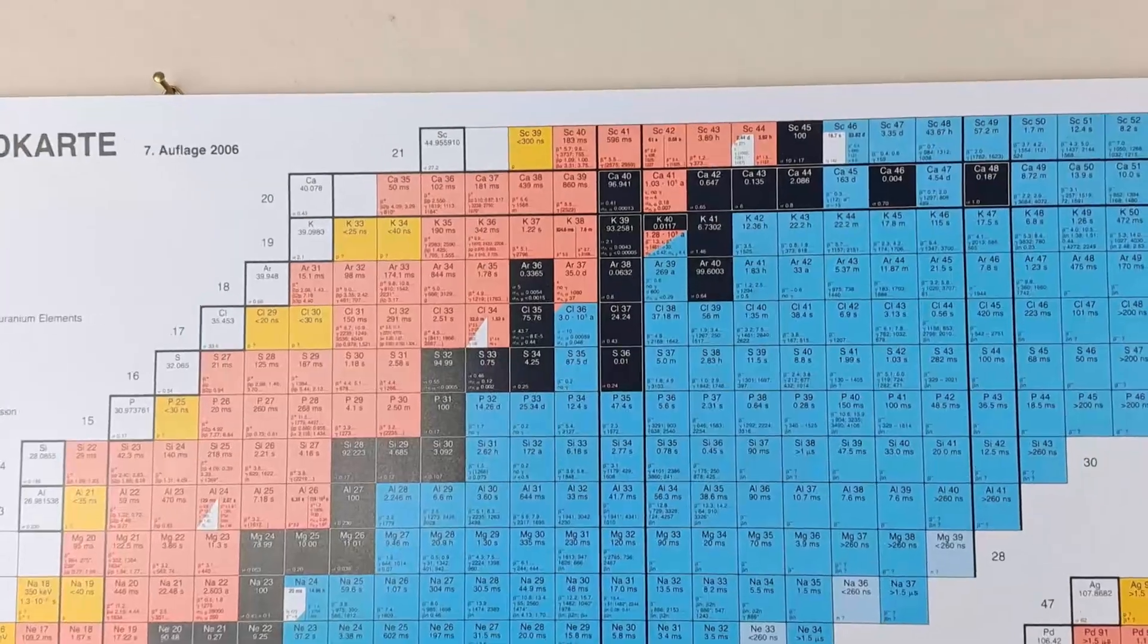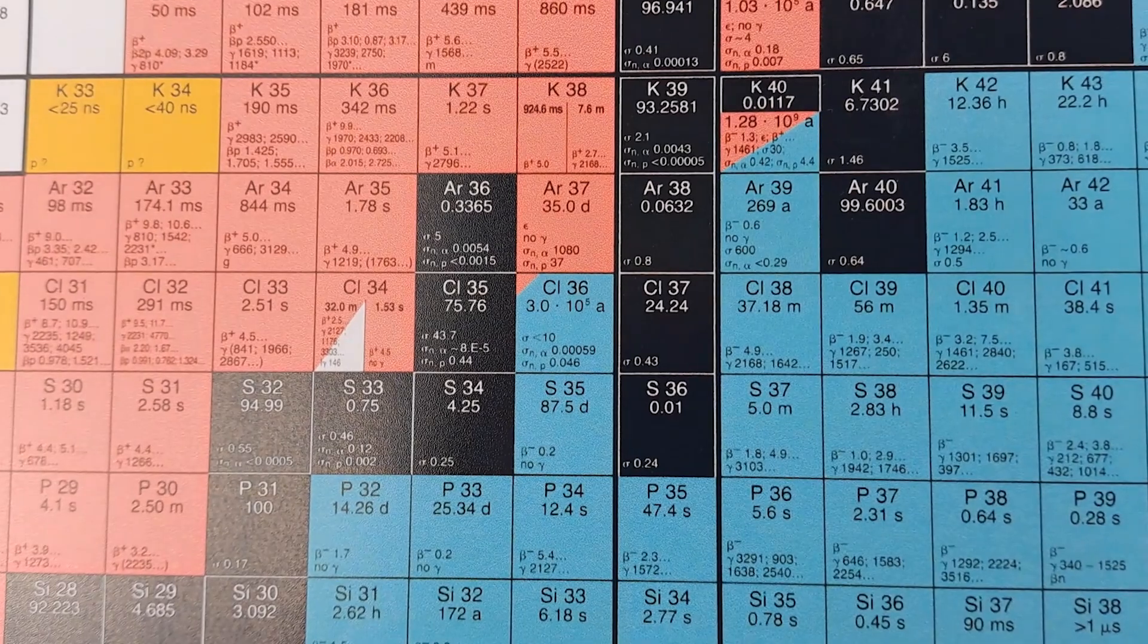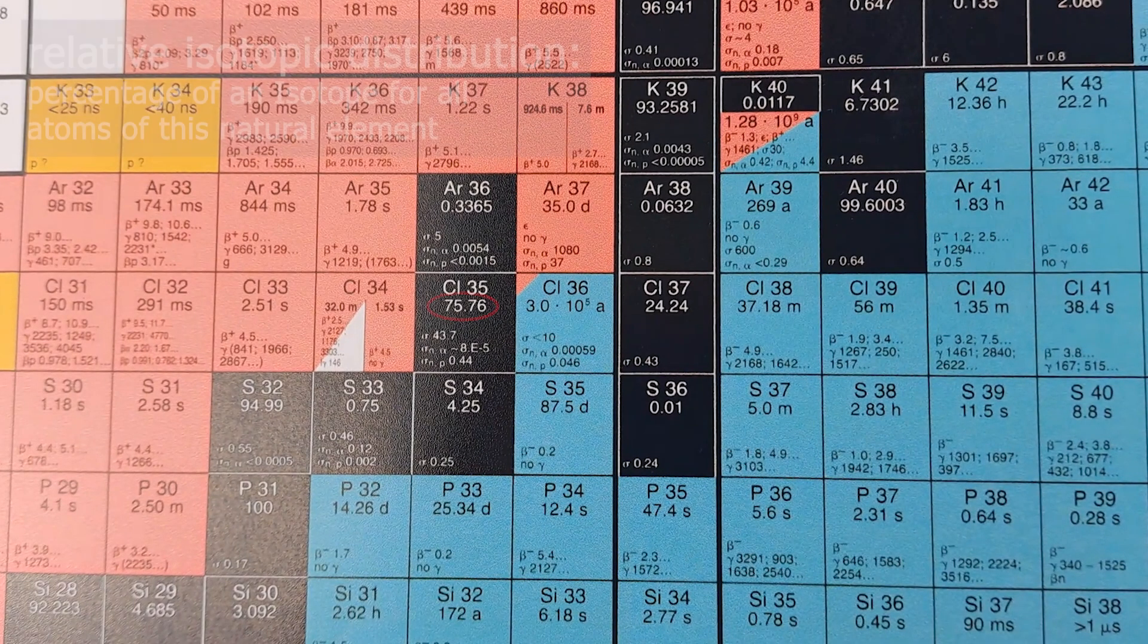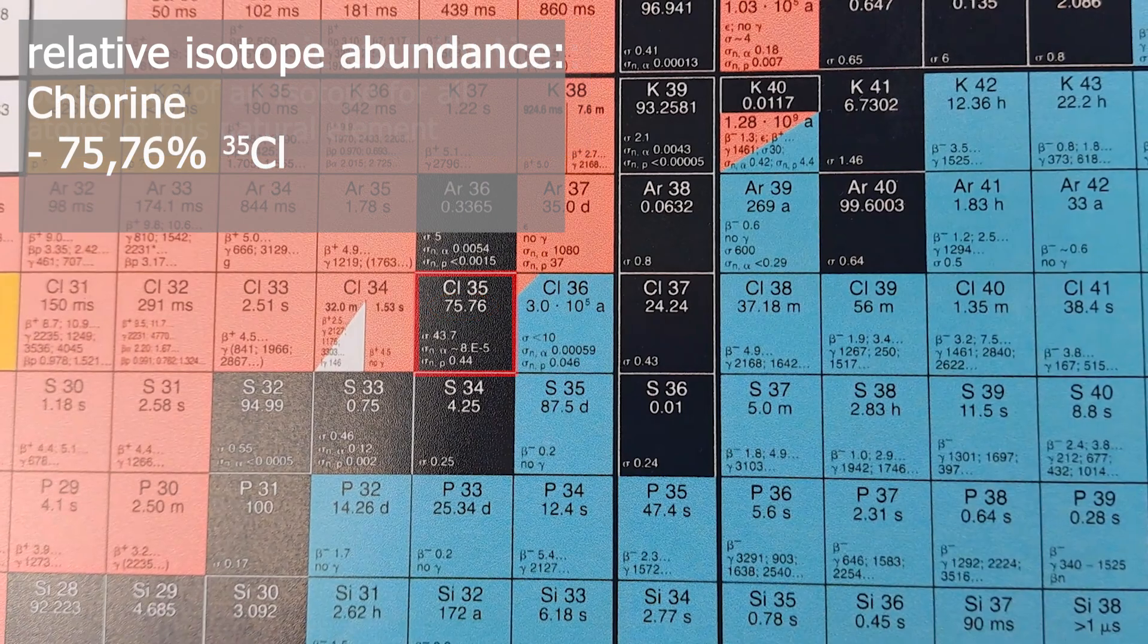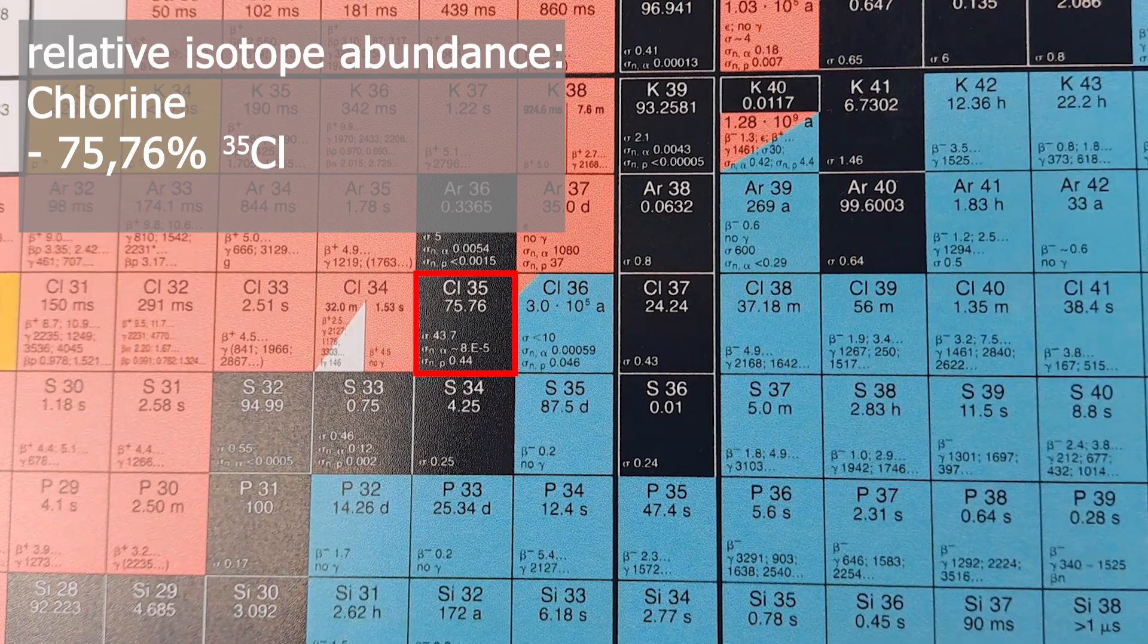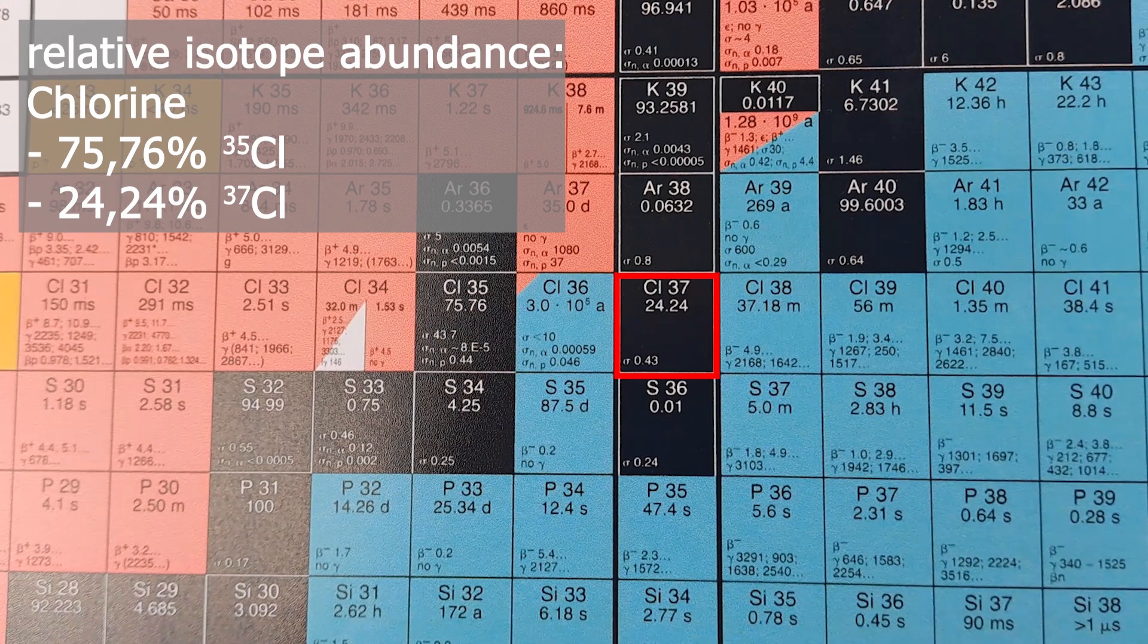Now let's take a look at the numbers inside the tiles. Let's start with the simple stable nuclides. Of course they don't have a half-life, but we do have another very interesting number. The relative abundance of this isotope in this naturally occurring element. For instance, chlorine-35 isotopes make up 76 percent of all naturally occurring chlorine atoms. Chlorine-37 makes up the remaining approximately 24 percent.